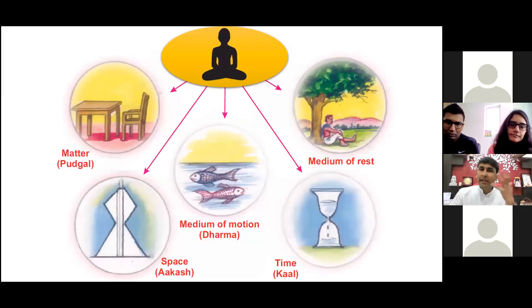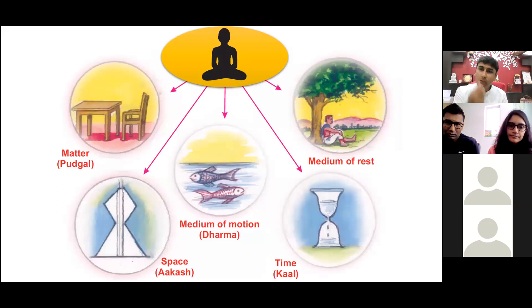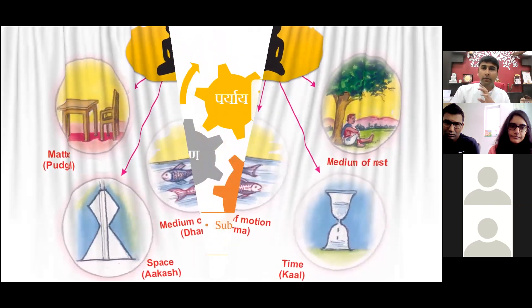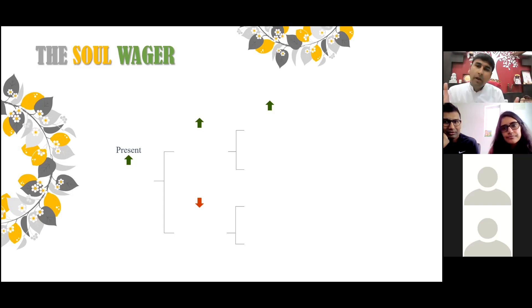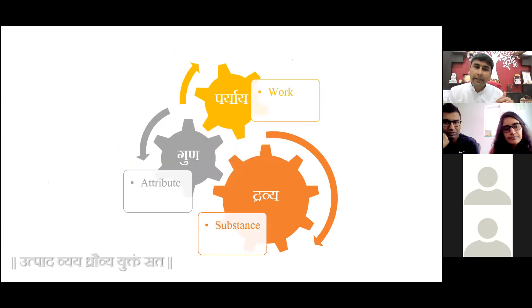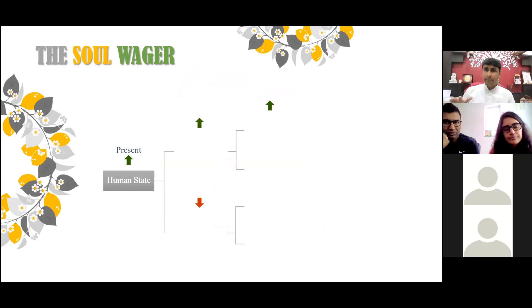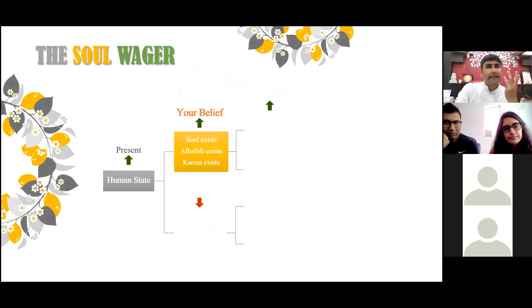To further cement our belief that the soul exists, the karmas exist — because we're living in a world where everybody does not say these things exist — we are going to a great mathematician named Pascal. He made a Pascal's Wager. We have converted it into a different setting: we are all going to play a gamble with our belief system. Here is me — the human state, the present state that I am — and I have only two ways. Either I believe that the soul exists, the afterlife exists, and the karma exists. If I believe this, I am soul and not just body: I care less about the body, more about my inner emotions, I practice more gratitude, more forgiveness, more consideration towards others.